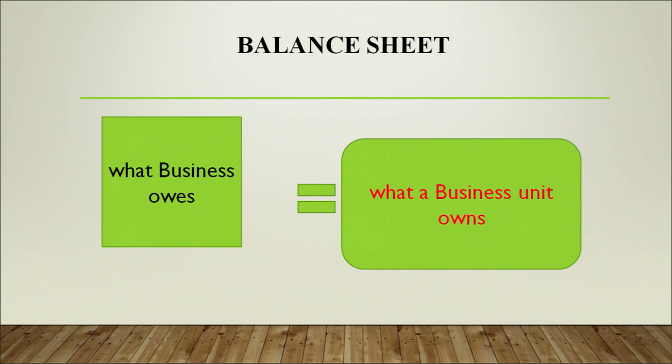Your non-current liabilities are those obligations which can be paid beyond one year, but in the case of current liabilities, these obligations have to be met within one year of the date of the balance sheet. We can now arrive at this conclusion that liabilities represent what a business owes to others, and it must always be equal at the end of making a balance sheet to what a business unit owns or what resources it owns. We will now start entering all the assets and liabilities onto a balance sheet, but in some particular order.